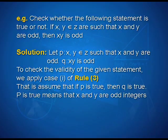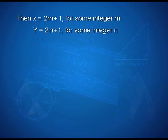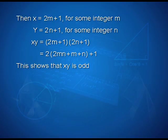p is true means that x and y are odd integers. Then x = 2m + 1 for some integer m, and y = 2n + 1 for some integer n. Thus, x·y = (2m+1)(2n+1), which on simplification gives 2(2mn + m + n) + 1. This shows that x·y is odd. Therefore, the given statement is true.